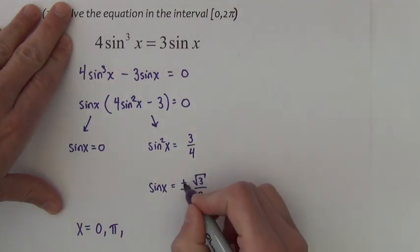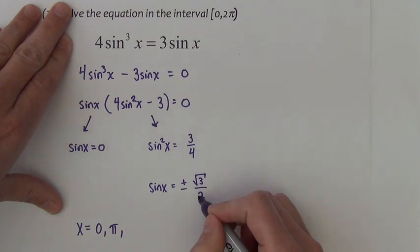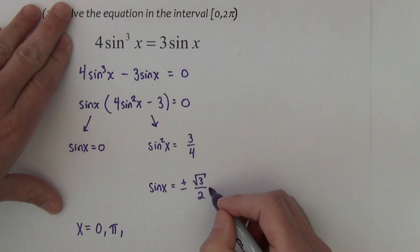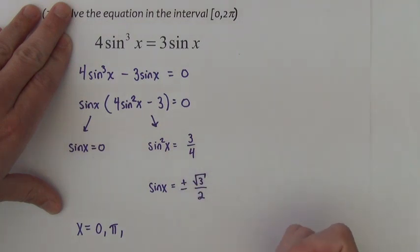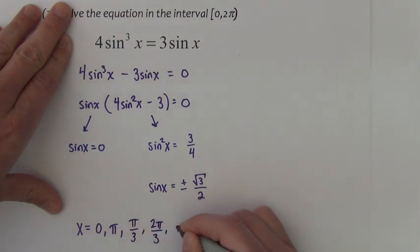We also want to know where is the sine equal to plus and minus square root of 3 over 2. Those are all the y values where this is the coordinate. That would be π over 3, 2π over 3, 4π over 3, and 5π over 3.